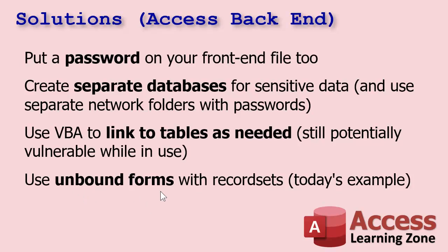The other option — and the one that I like to use, though it takes a little more work to set up — is basically using unbound forms throughout your database. When we open a form, we'll create a record set that will connect to the data source on the fly, pull in the data that you need for that form, and then when you close the form, it just closes the record set. You don't need any linked tables at all. You can link to tables, link to queries — they can be in secure Access backend files, on the web, on SQL Server, a local SQL Server file. You can connect to any ODBC source that you want.